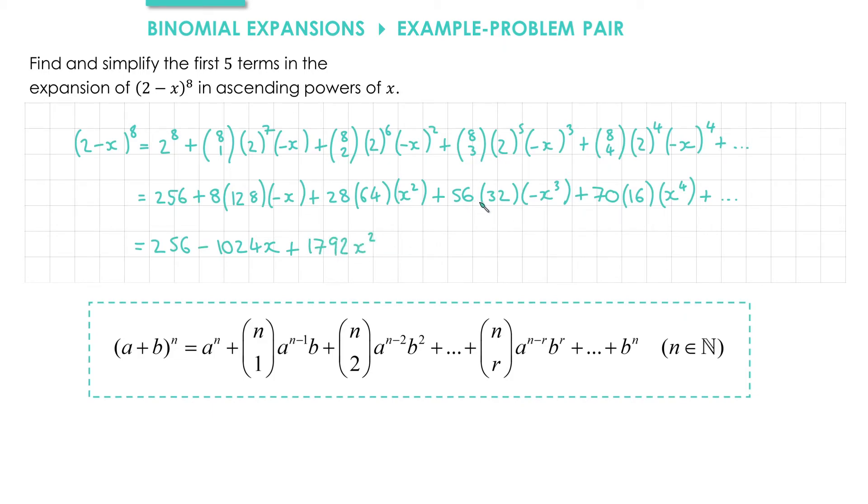For the x cubed term, we're doing 56 times 32 times negative x cubed. So the answer will be negative, and it's 1792x cubed.